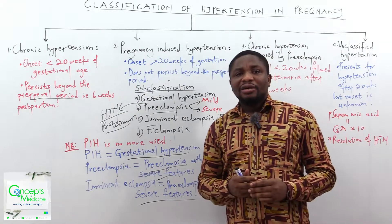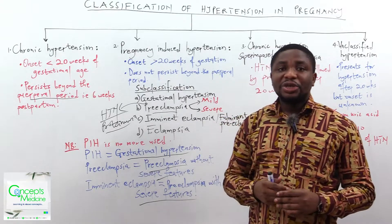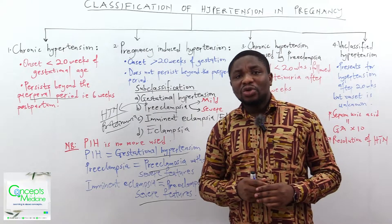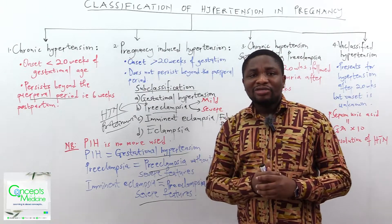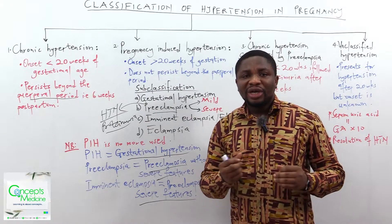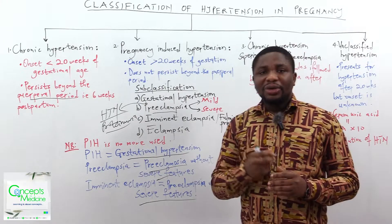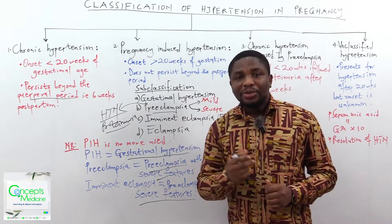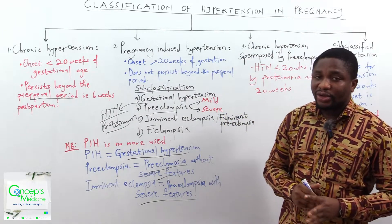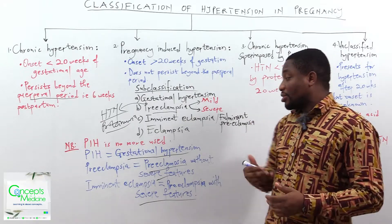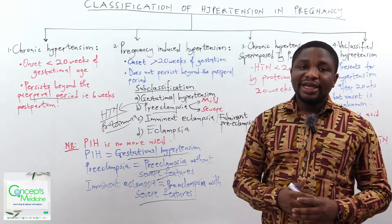The severe features include persistent frontal headaches that do not respond to normal analgesics, right upper quadrant pain, epigastric pain, visual disturbances, signs of increasing hypertension, liver tenderness, and increased tendon reflexes with or without clonus. If these are present, we are talking about preeclampsia with severe features, which was formerly referred to as imminent eclampsia.